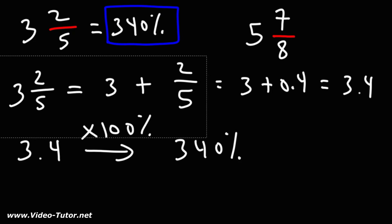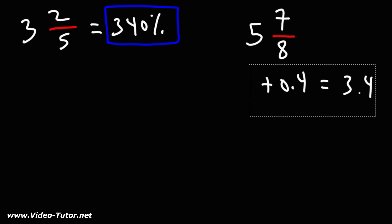Now feel free to try the next example. You can pause the video if you want and then play it to see the solution. So let's convert 5 and 7 eighths to a decimal and then a percentage. This is 5 plus 7 over 8.